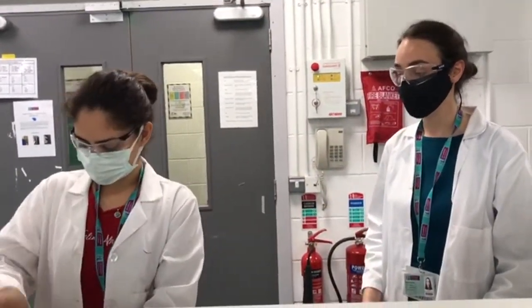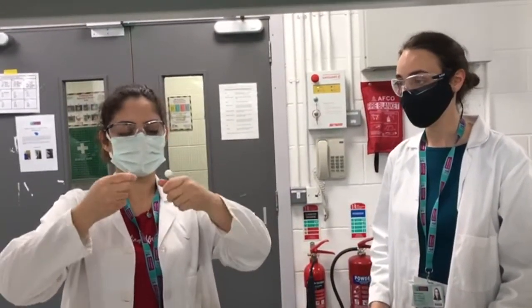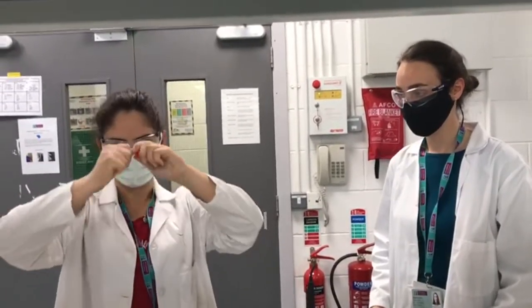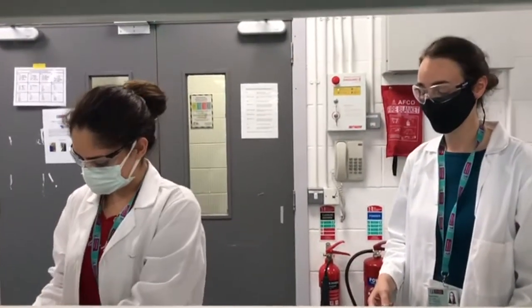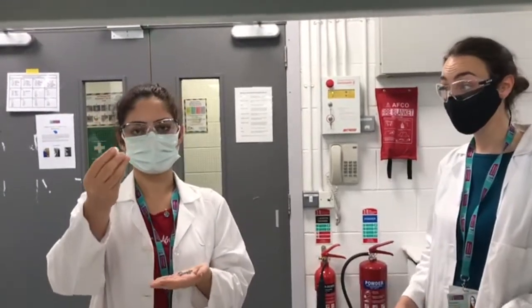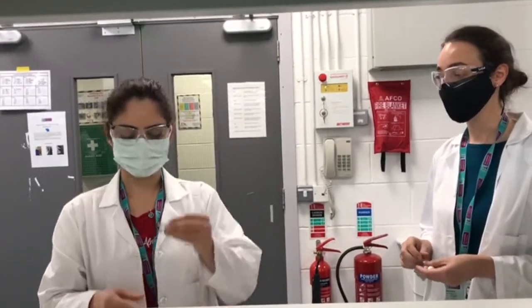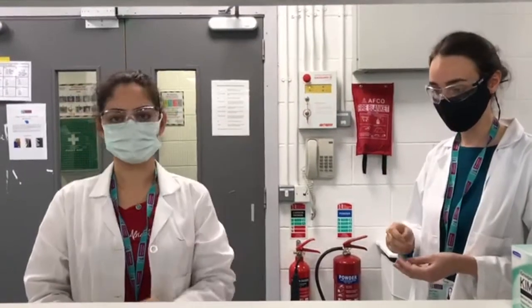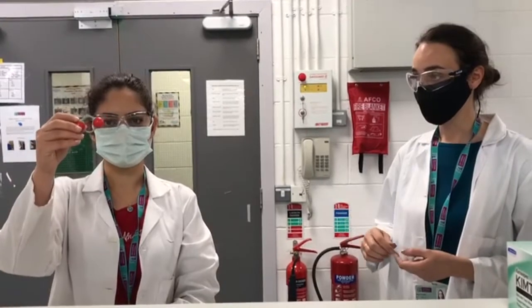The water at the anode is split into oxygen, hydrogen ions and electrons. The hydrogen ions then move through the membrane to the cathode. And the electrons, which can't move through the membrane, move through the external circuit also to the cathode. And the oxygen is released.